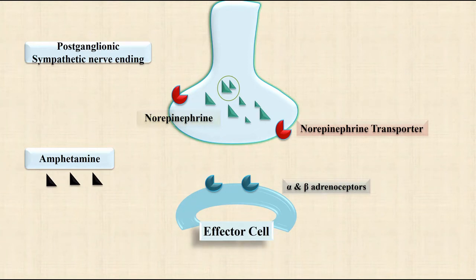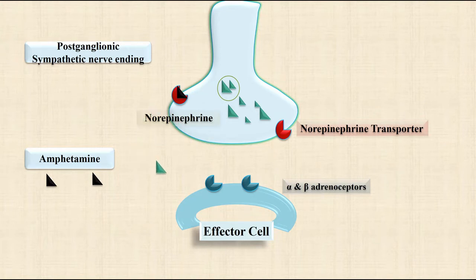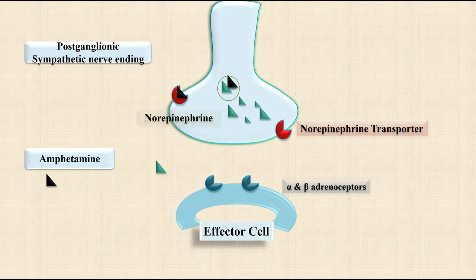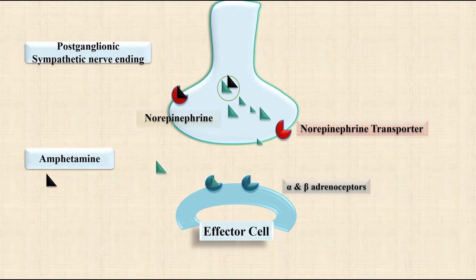Amphetamine, a psychostimulant drug, has the ability to block the norepinephrine transporter, and thus prevents further uptake of norepinephrine into the presynaptic terminal. Amphetamine also acts as a substrate for the norepinephrine transporter and is sequestered into the presynaptic vesicle, thereby replacing norepinephrine from the storage vesicle into the synaptic cleft. So now more norepinephrine is available to act on the receptors, which potentiates its effects.